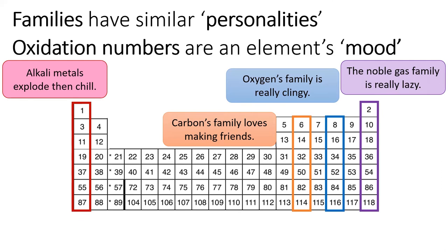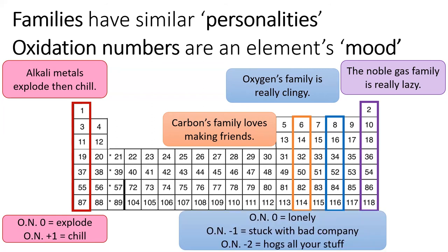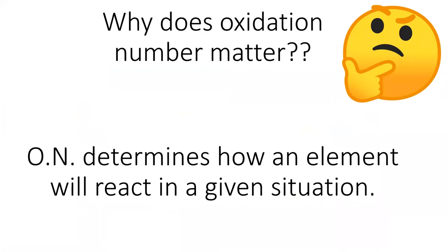If an element's family gives it a personality, then its oxidation number determines its mood. For group 1A, if the oxidation number is zero, they have a lot of pent-up energy just waiting to get out. But after they explode, their oxidation number becomes +1 and they're super calm and unreactive. For group 6A, with an oxidation number of zero, they're feeling really lonely and they're looking to make friends if they can summon up the energy. At oxidation number -1, they're feeling stuck with someone unlikable and they want to meet somebody new. At oxidation number -2, they're super happy, but it's because they get to hog all your stuff. So to return to our original philosophizing, the oxidation numbers on elements determine how they will interact with each other in any given situation. And that's a very important thing for a chemist to know.